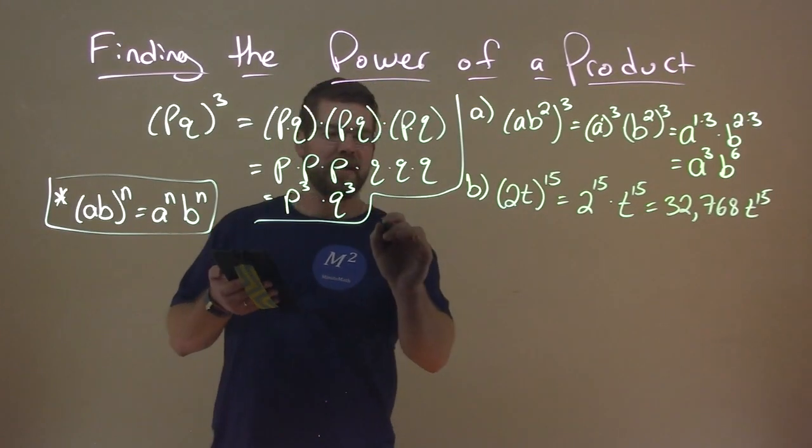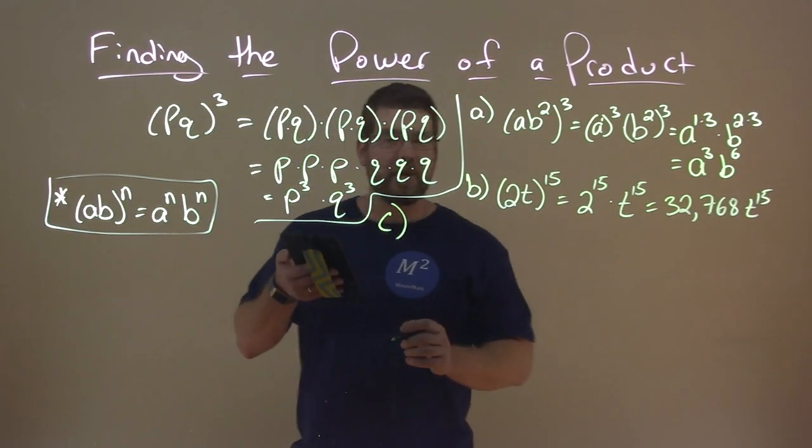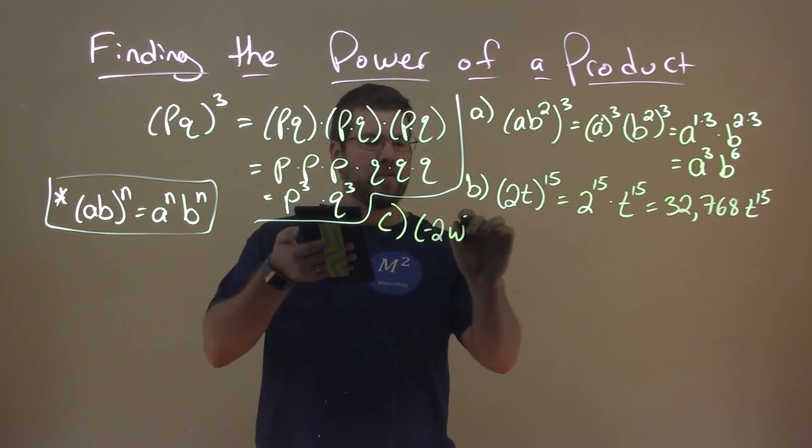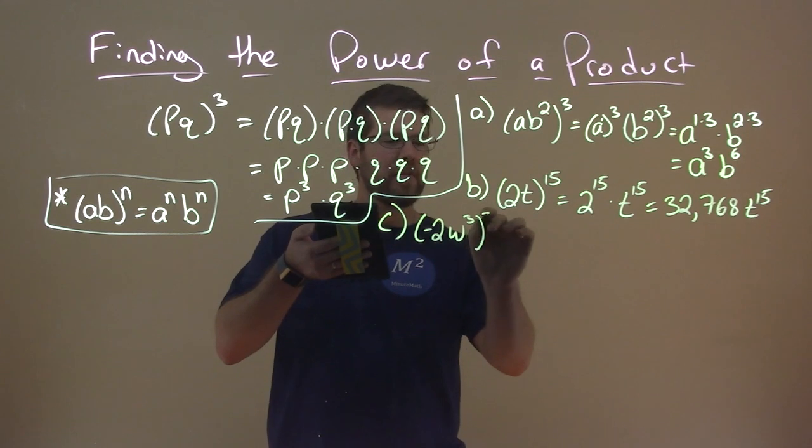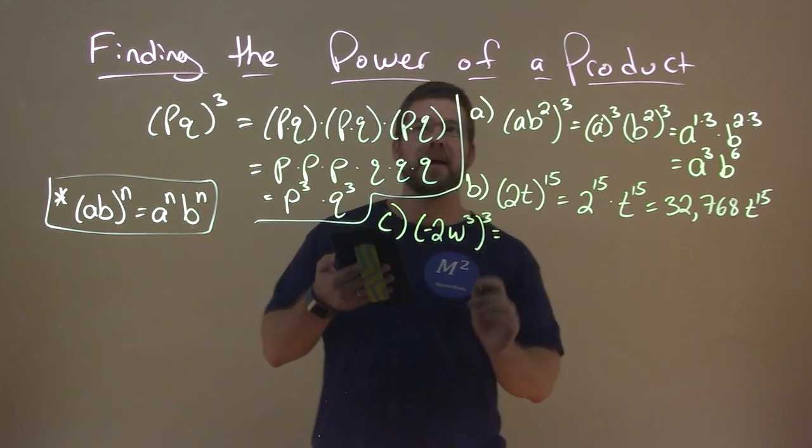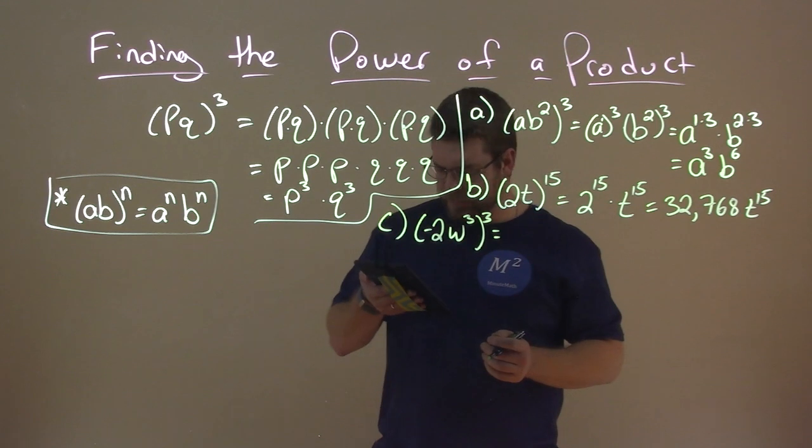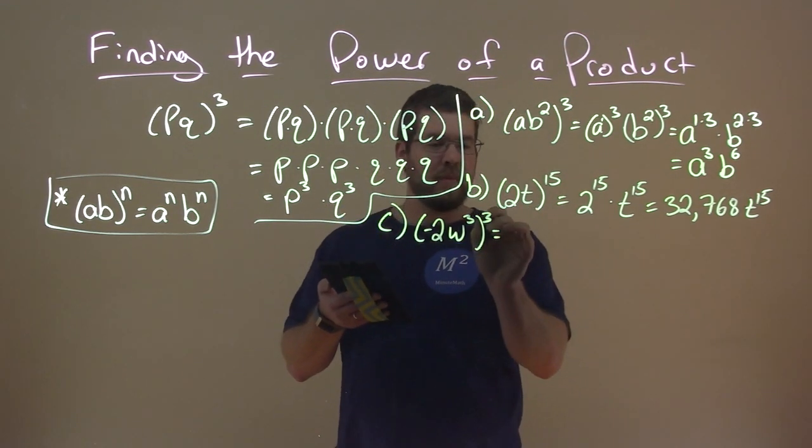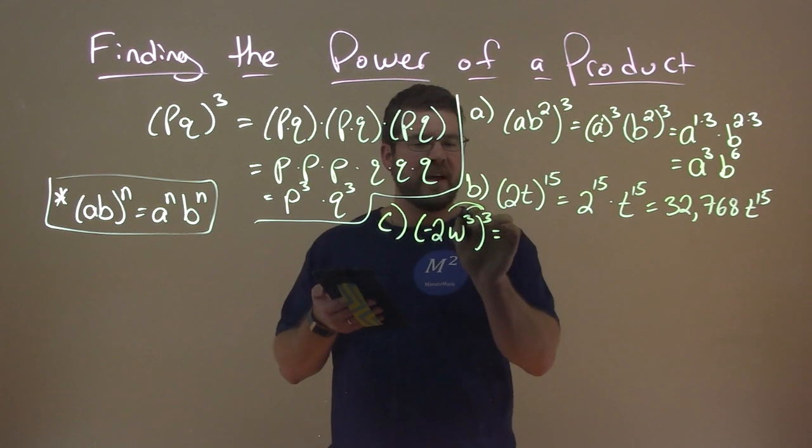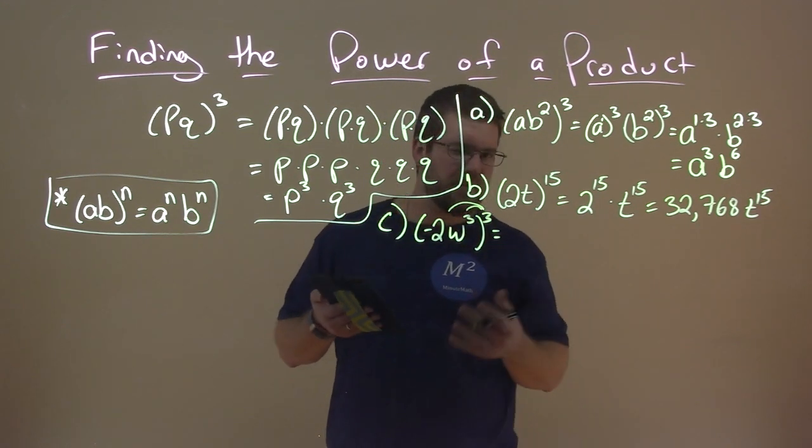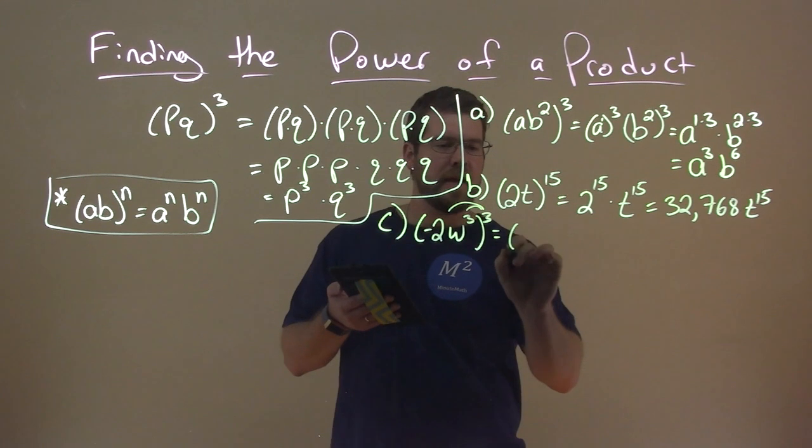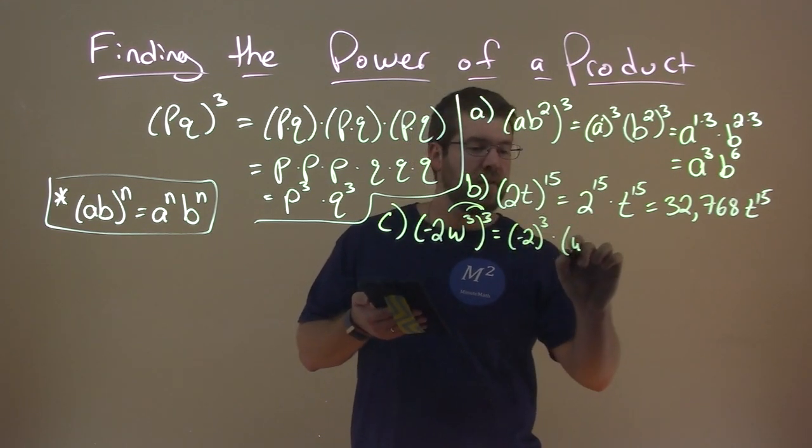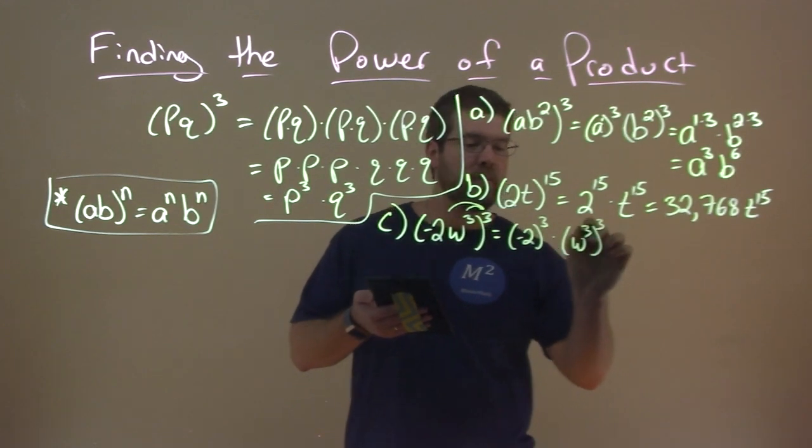Let's go with c right here. c, a little more complicated. We have a negative 2w to the third power, all to the third power. Again, we apply the power of a product rule here. And we have, well, the negative 2. Remember, we kind of distribute, this exponent to both parts. It's not the right way to say it, but that's essentially what we're doing. Negative 2 to the third power times w to the third, all to the third power.